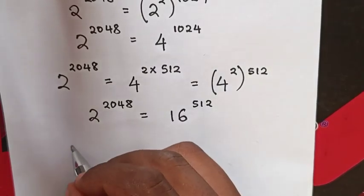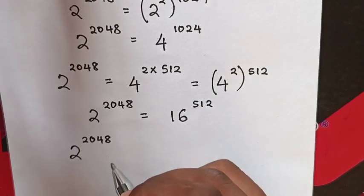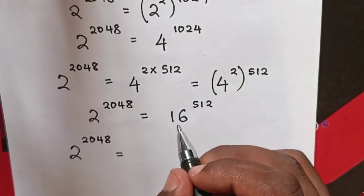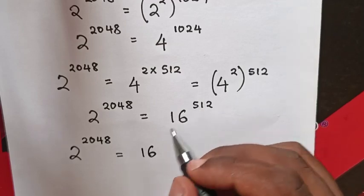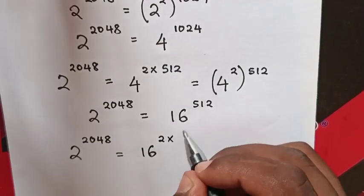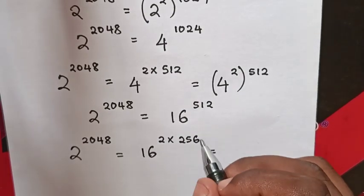Then 2^2048 equals 16, with the exponent divided by 2, which is 16^(2×256), which equals